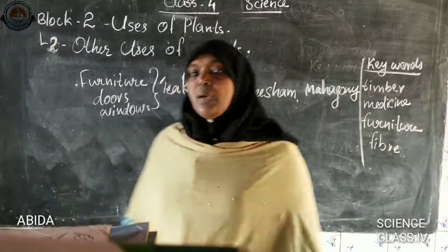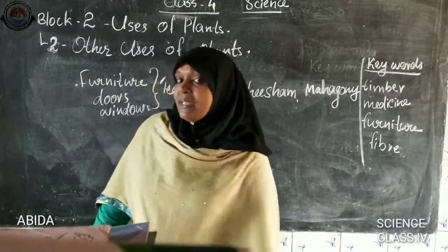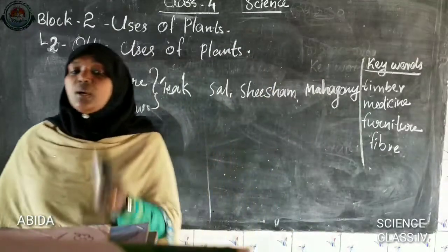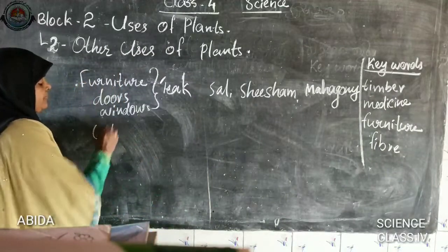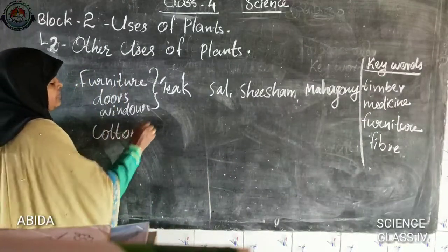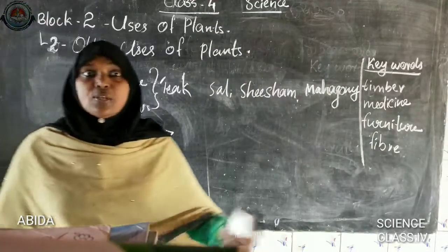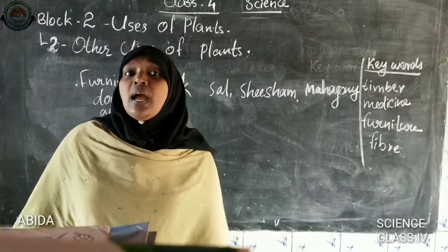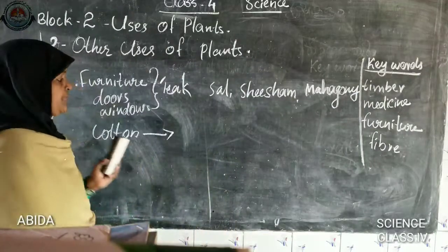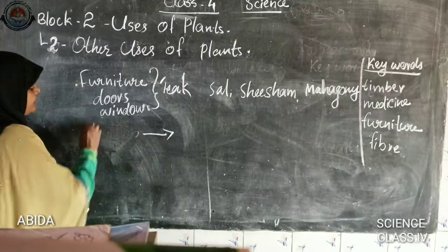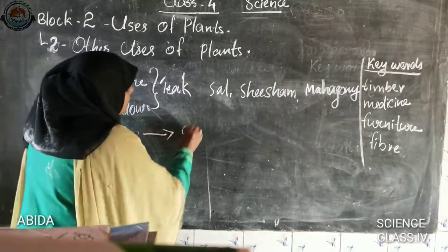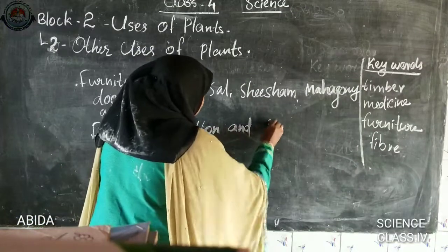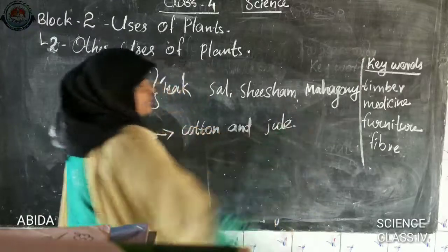Which plants give us cotton to make clothes? We get fiber to make clothes from cotton and jute plants.